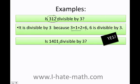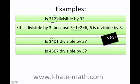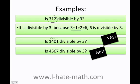Is 1,401 divisible by 3? The answer is yes. 1 plus 4 is 5, 5 plus 0 is 5, 5 plus 1 is 6. The addition of all the digits gives me 6, and 6 is divisible by 3. What about 4,567? Just add the digits: 4 plus 5 is 9, 9 plus 6 is 15, and 15 plus 7 is 22. Therefore, is 4,567 divisible by 3? No.